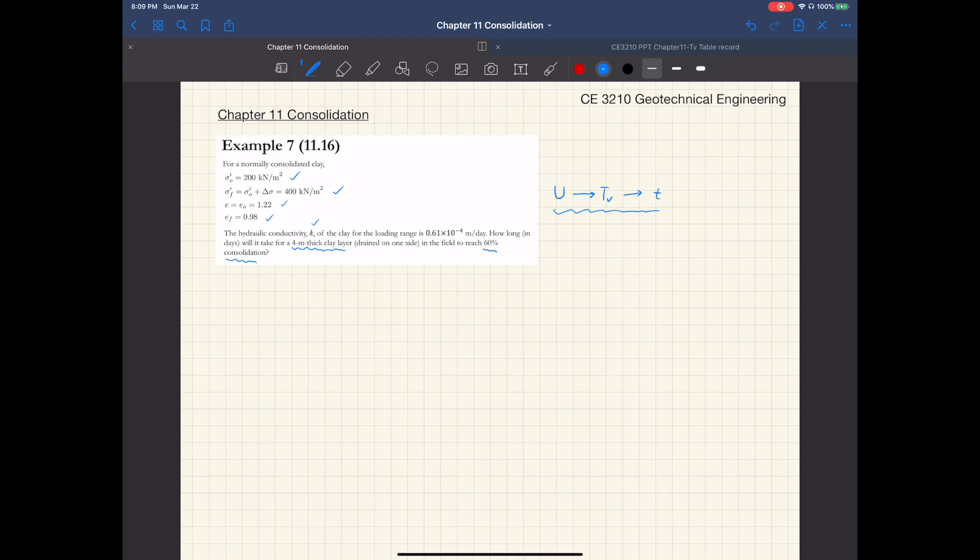To figure out the coefficient of consolidation, I'm going to make use of this expression here. C sub V, the coefficient of consolidation, is related to the hydraulic conductivity K and the coefficient of volume compressibility M sub V, and also the unit weight of water. Small K is given as 0.61 times 10 to negative 4 meters per day, and the unit weight of water in our SI units is 9.81 kilonewtons per meter cubed.